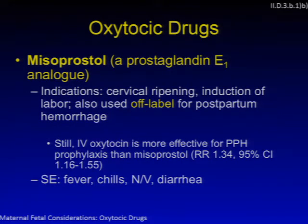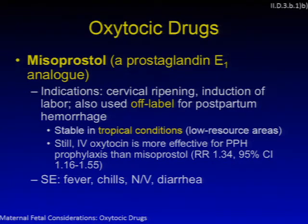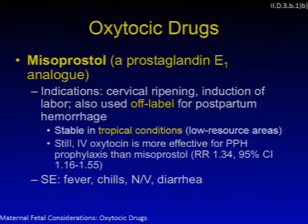Misoprostol is a prostaglandin E1 analog indicated for cervical ripening, induction of labor, and used off-label for postpartum hemorrhage. Its stability in tropical conditions makes it attractive for low-resource settings, since oxytocin and ergot alkaloids require refrigeration. IV oxytocin remains more effective for postpartum hemorrhage prophylaxis than misoprostol. Side effects include fever, chills, nausea, vomiting, and diarrhea.